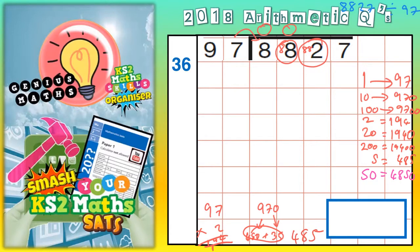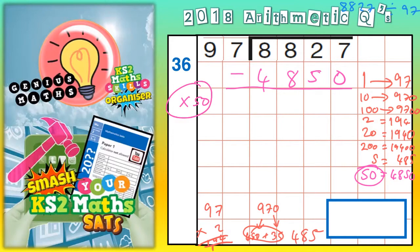And then you can start subtracting your chunks. So the biggest chunk I'm going to subtract now is this chunk of 50. 4850. Let's subtract that. Remember, you need to be extremely careful that you don't make any mistakes.